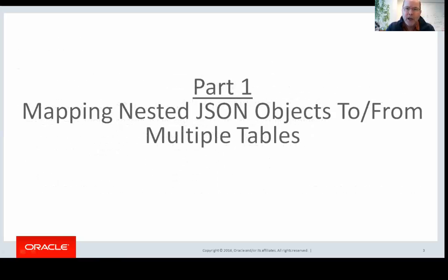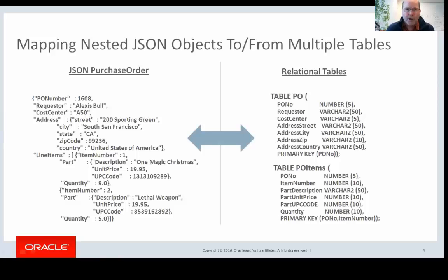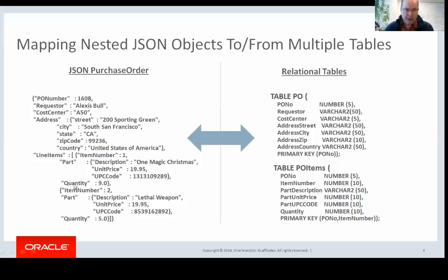This is mapping nested JSON objects to and from multiple relational tables. Here's the example I'm going to be walking through. On the left, I have a JSON purchase order, and this has all the elements you'd expect: a purchase order number, a requester, a cost center, an address which is a nested object containing street, city, and so on. Then there's a line item element, which is an array of items making up the purchase order. For each item, we have the item number, a part description with description, unit price and unit code, a quantity for that item, and then another item. So this is a JSON array — it can have no elements or any number of elements.